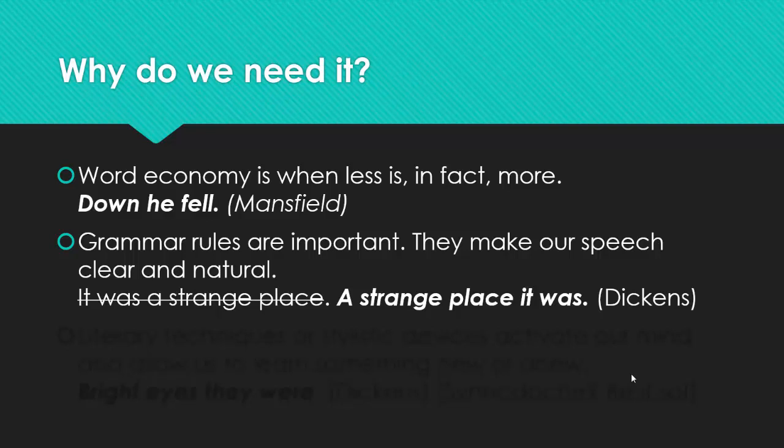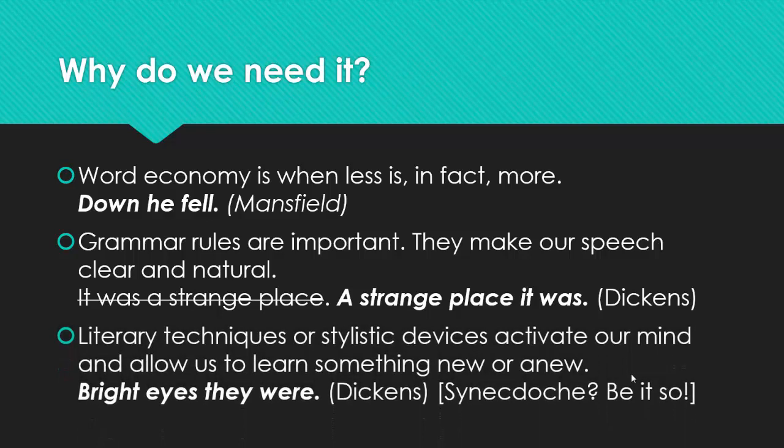And grammar rules are important. They make our speech clear and natural. For example, we can say it was a strange place. But it's a direct word order. It does not make the sentence very vivid. If we use inversion as Charles Dickens did: A strange place it was. You can hear again in my voice that maybe it sounds more natural. What do you think? And one more part. Literary techniques or stylistic devices activate our mind and allow us to learn something new or anew. For example, Charles Dickens: Bright eyes they were. Synecdoche and inversion. We have two stylistic devices in one sentence.